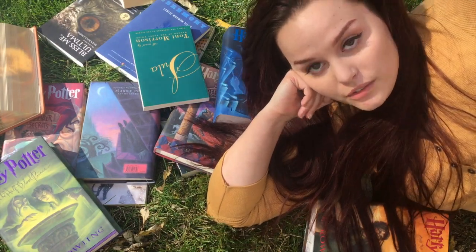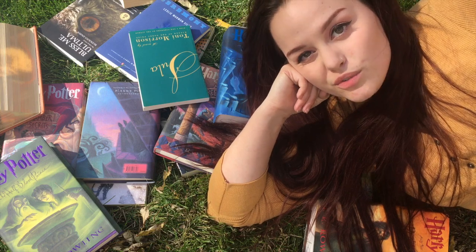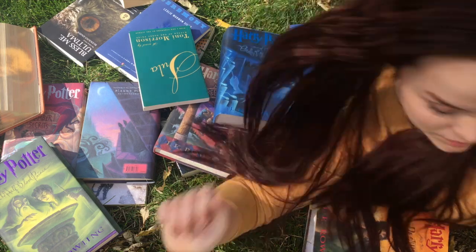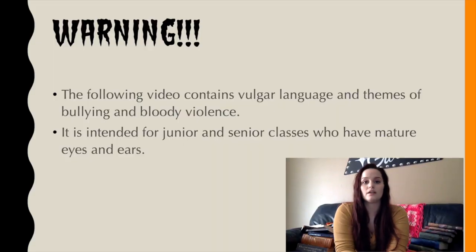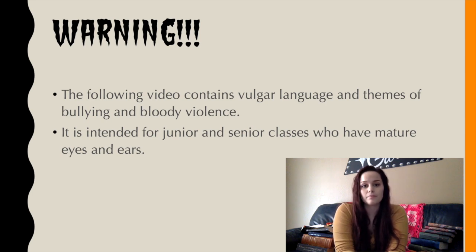Now, all of these books aren't the only examples and non-examples of magical realism — they're just a few key ones to help you understand. So now that we've seen examples of magical realism in text, it's important to point out that magical realism can also be in other forms, for example, film. The following short film is a good example of this, but please be warned: it does contain vulgar language and themes of bullying and bloody violence. It is intended for junior and senior classes who have mature eyes and ears. If you want to skip this video, please feel free to do so. Now get ready for The Birch.